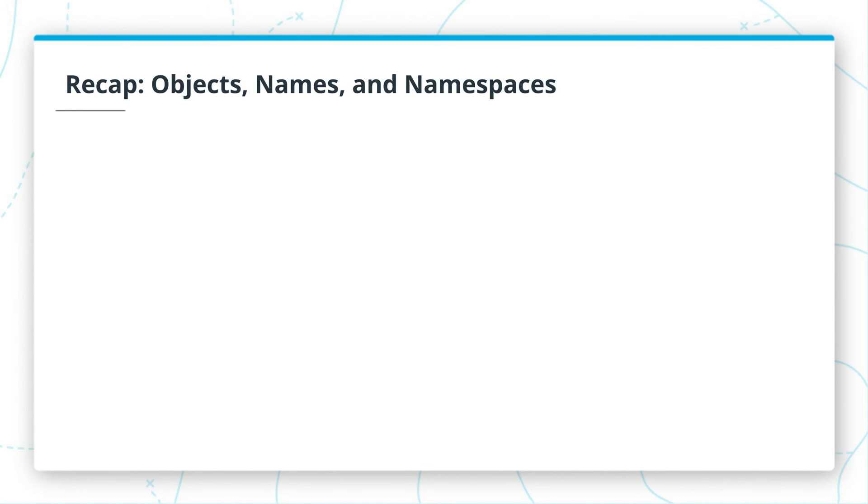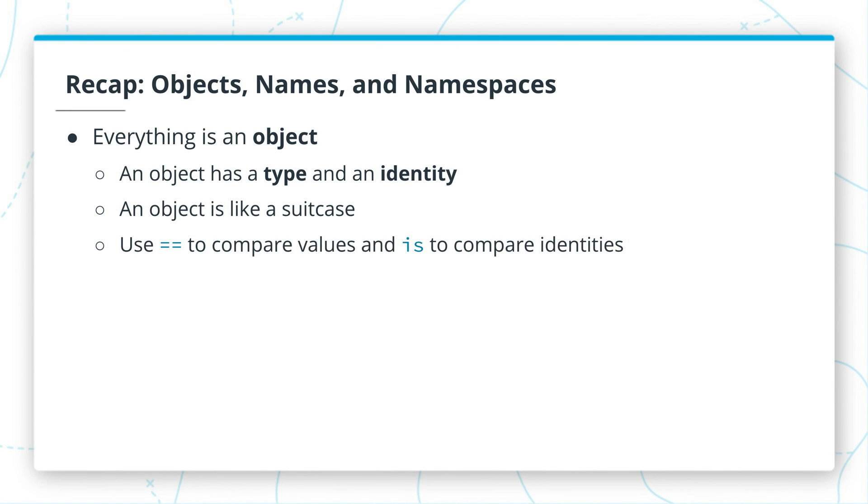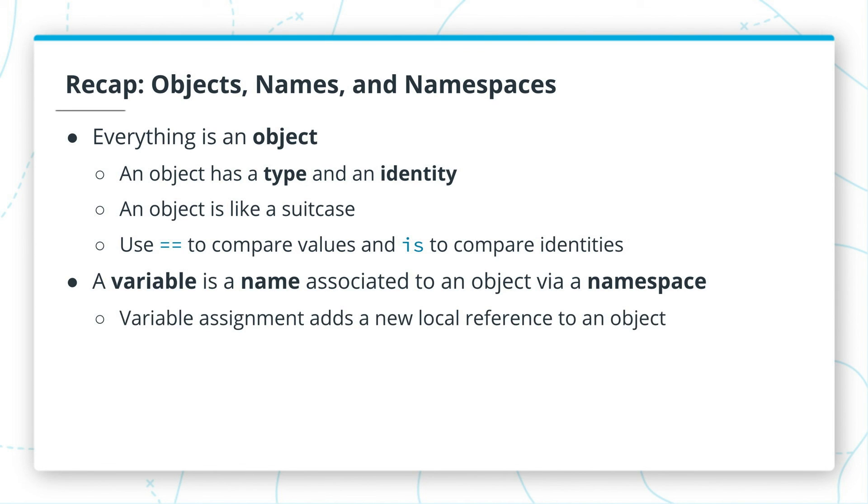To recap what we've just seen, we saw that everything in Python is an object, that objects have type and identity, and that an object can be thought of as a suitcase. We also saw that you can use double equals to compare values and is to compare identities, seeing one if the suitcases contain the same things, and is to see if they are literally the same suitcase. We also saw that variables are just names associated to some object via a namespace, a symbol table mapping names to objects, where variable assignment adds new local references to objects and does not copy objects, where in this case a variable is something like a baggage tag pointing to a suitcase.